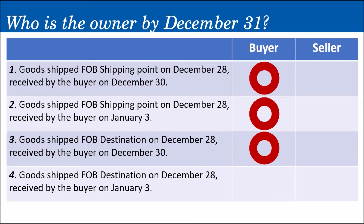In scenario number four, the goods were shipped FOB Destination on December 28, but received by the buyer on January 3. So if it was sent December 28 but received only on January 3, by December 31 it is still in transit. Under FOB Destination, ownership can only be passed to the buyer upon arrival. Since by December 31 it is still in transit, the ownership of the merchandise by December 31 still belongs to the seller.